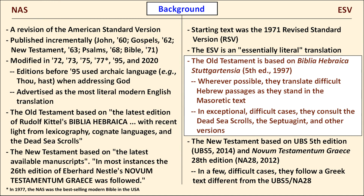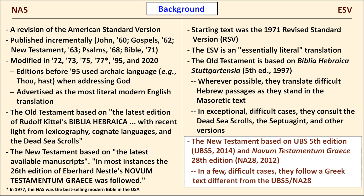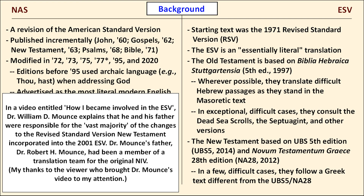The ESV is based on the fifth edition of the Biblia Hebraica Stuttgartensia, an edition of the Masoretic text, though the translators sometimes depart from it in favor of the Dead Sea Scrolls and ancient translations like the Septuagint. The ESV's New Testament is translated from NA28, but the translators made their own textual choices. In a YouTube video, Dr. William Mounce — famous for his textbook Basics of Biblical Greek — states that he and his father were responsible for the vast majority of differences between the RSV and the ESV, primarily in the New Testament. I recommend watching that video.